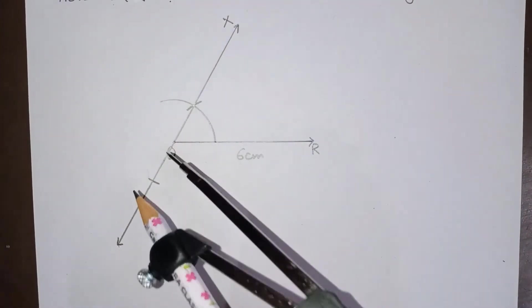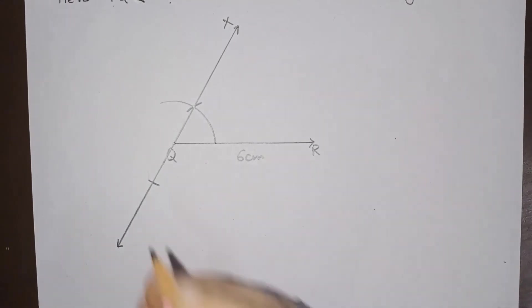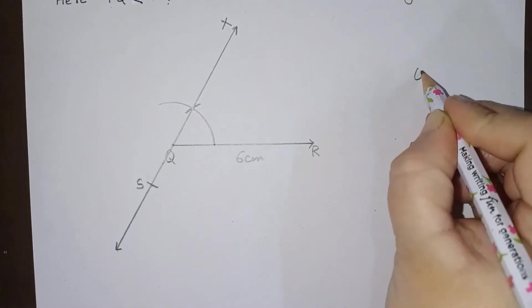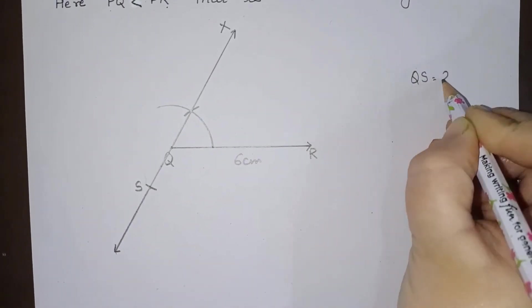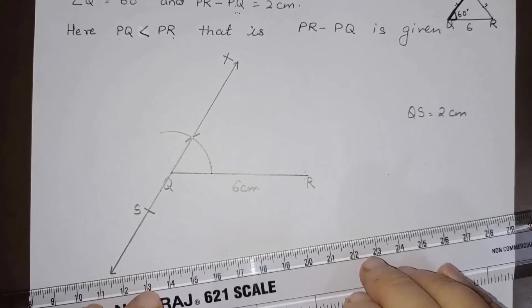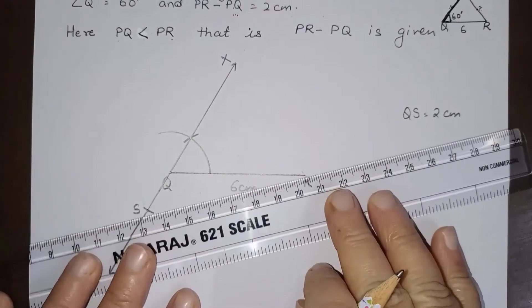Here we will take a point S on a ray opposite to QX, such that this QS is 2 centimeter. QS is 2 centimeter, right. Now we will join SR.